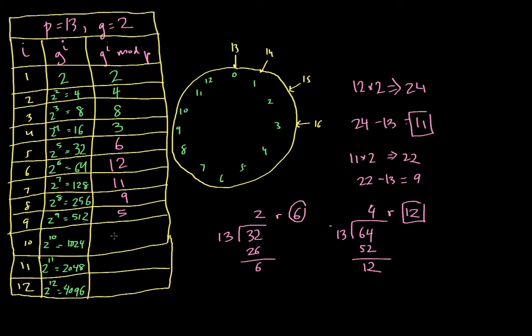I don't need to reduce that anymore because it's between 0 and 12. 10 times 2 is 20. 20 minus 13 is 7. 7 times 2 is 14, and 14 minus 13 is 1. You'll notice, quite interestingly, when I got to 12, g to the 12th equals 1. It turns out this is true in general. If you have any type of group modulo p, then g to the p minus 1 for any generator g will always equal 1.